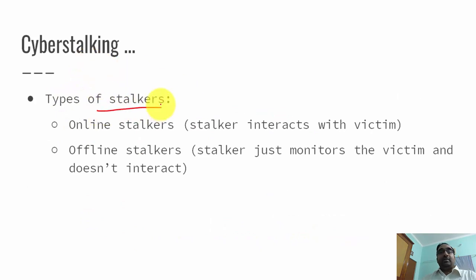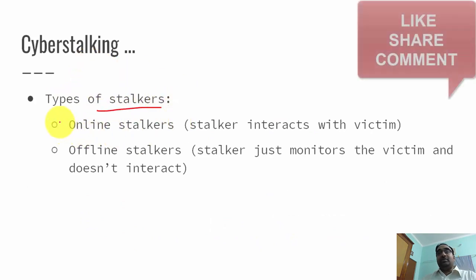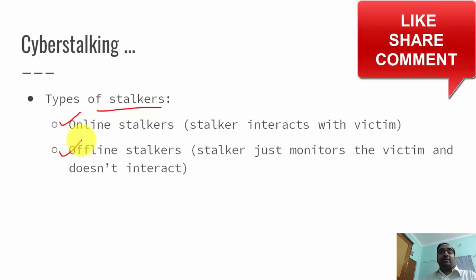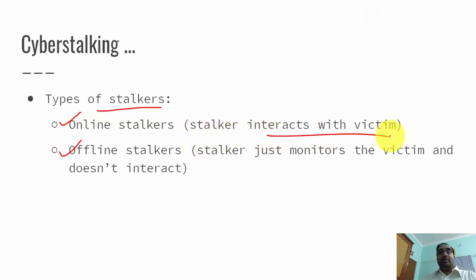There are two types of cyber stalkers: online stalkers and offline stalkers. Online stalkers interact with the victim virtually through the internet — not physical interaction. They may use Facebook, WhatsApp, or some other messenger software to have a conversation with the victim or target. This is called online stalking.